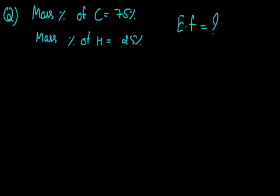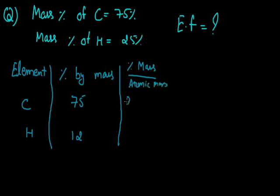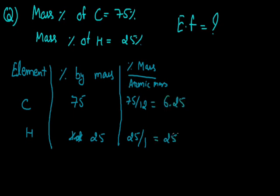We are provided with the percentage of these elements. The first column is for the elements: carbon and hydrogen. The mass percentage for carbon is 75% and for hydrogen is 25%. To get the simplest molar ratio, we divide the percentage by mass by the atomic mass. For carbon: 75 divided by the atomic mass of carbon, which is 12, gives 6.25. For hydrogen: 25 divided by the atomic mass of hydrogen, which is 1, gives 25. The least value of these two is 6.25.